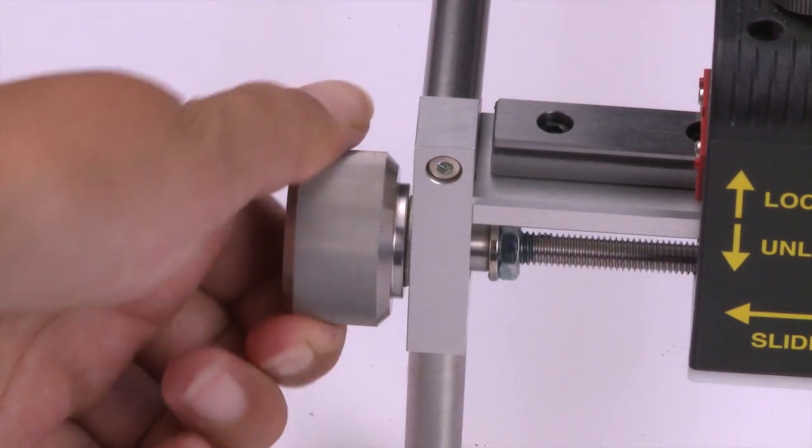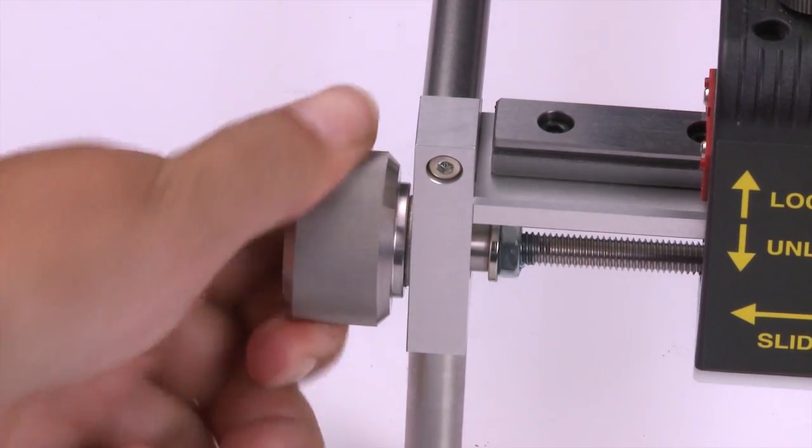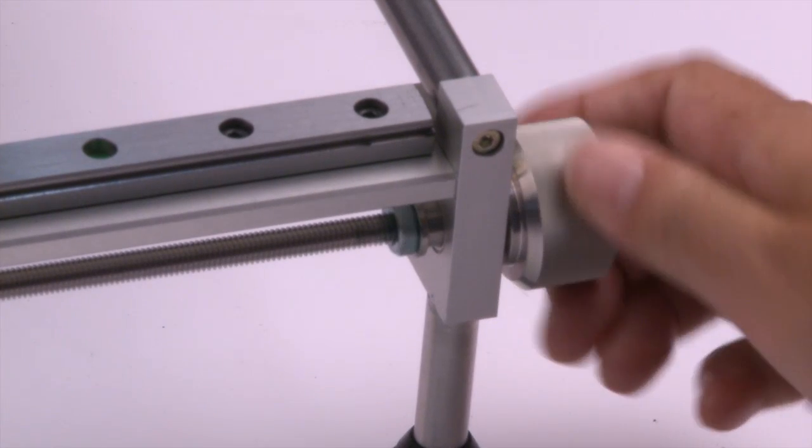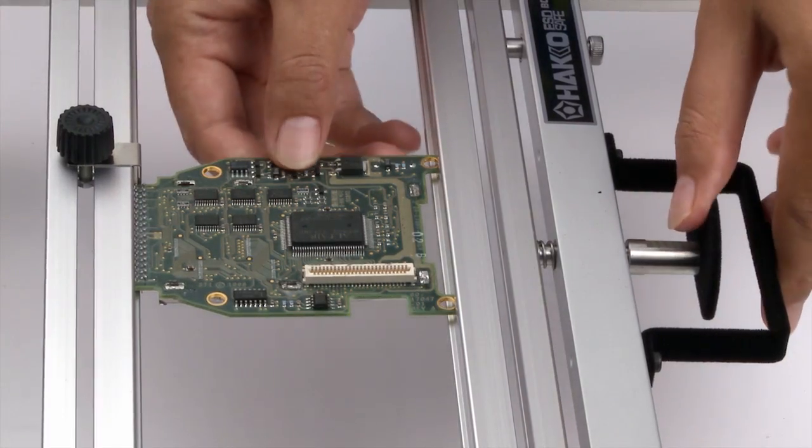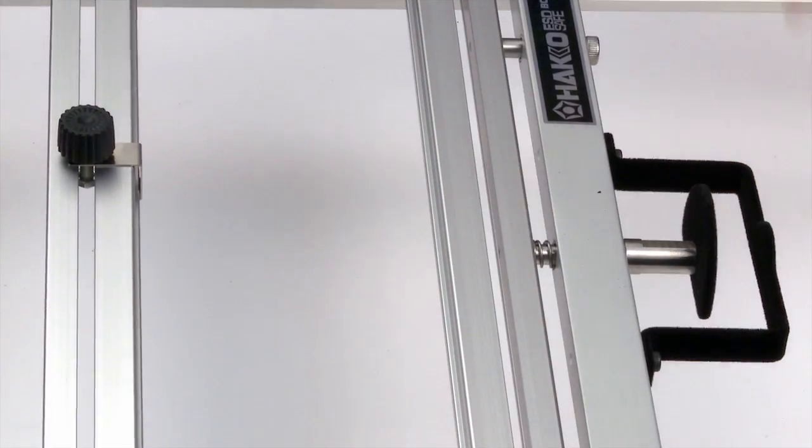For fine x-axis adjustments, use the fine adjustment knobs on the far left or right side of the holder. For a repeatable operation with another exact board, relieve the tension of the spring tension mechanism and open it up.